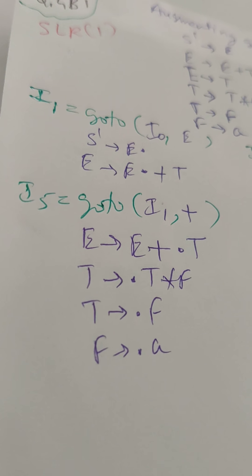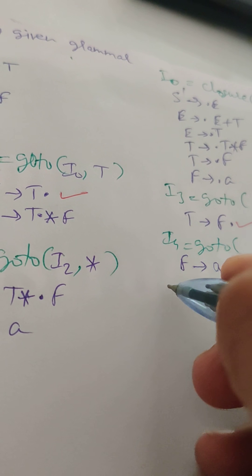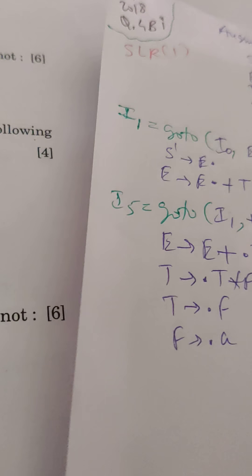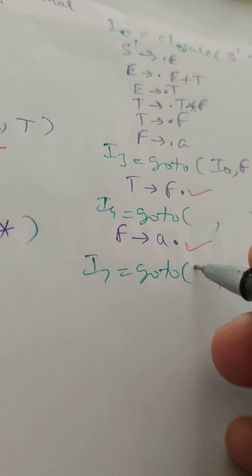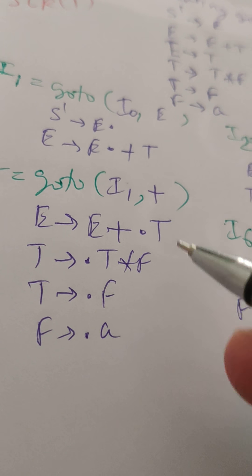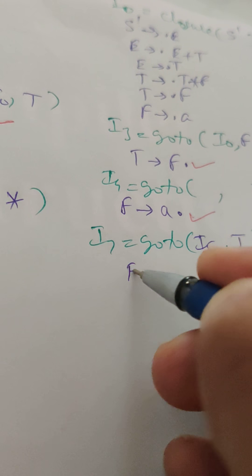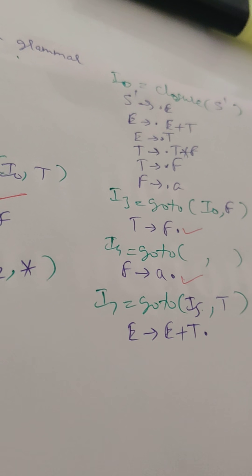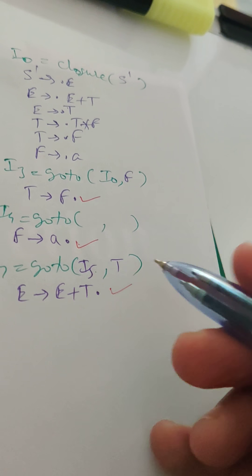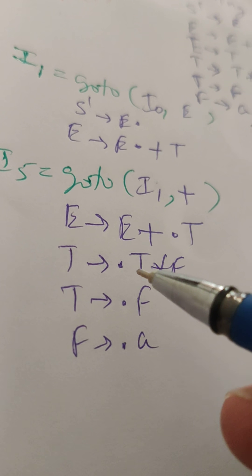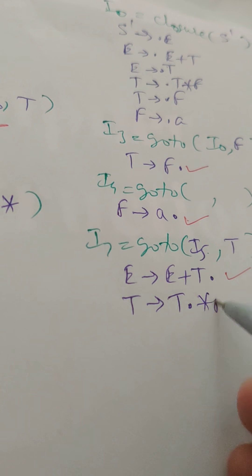I7 is the GOTO of I5 on T. We get E → E+T. (finished), and also T → T.*F since there is T after a dot in I5. So item I7 contains both the finished rule and T → T.*F.